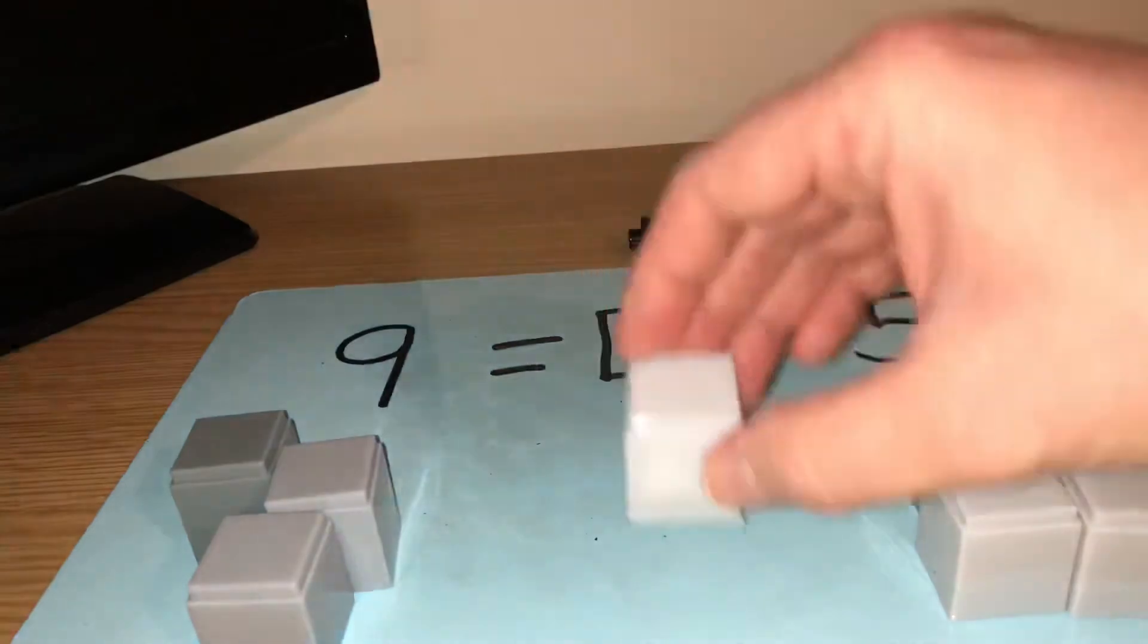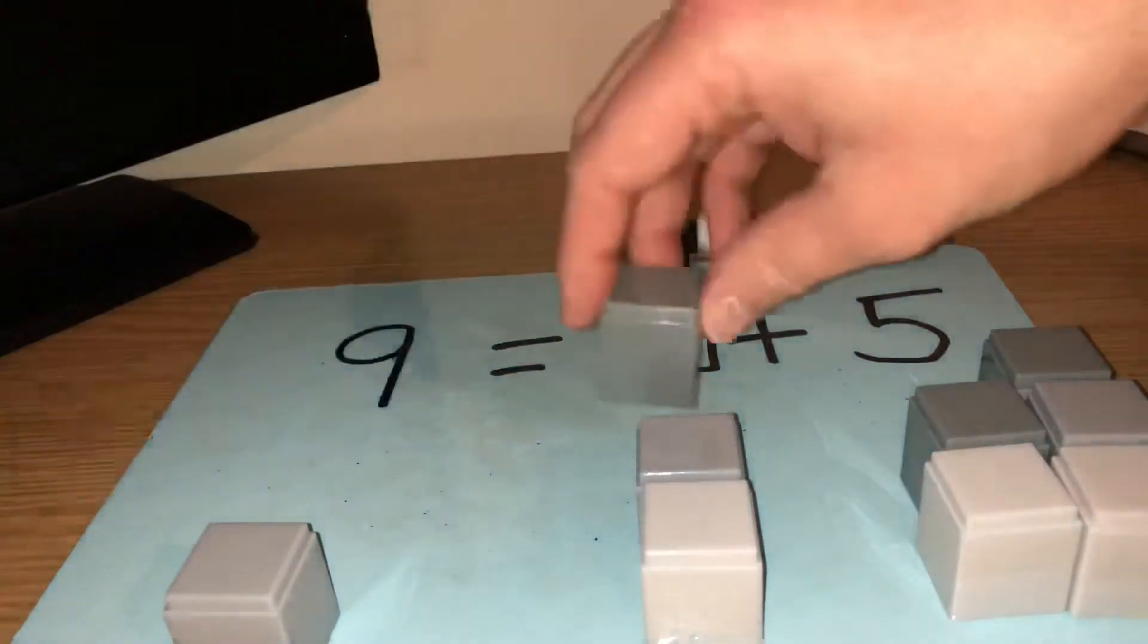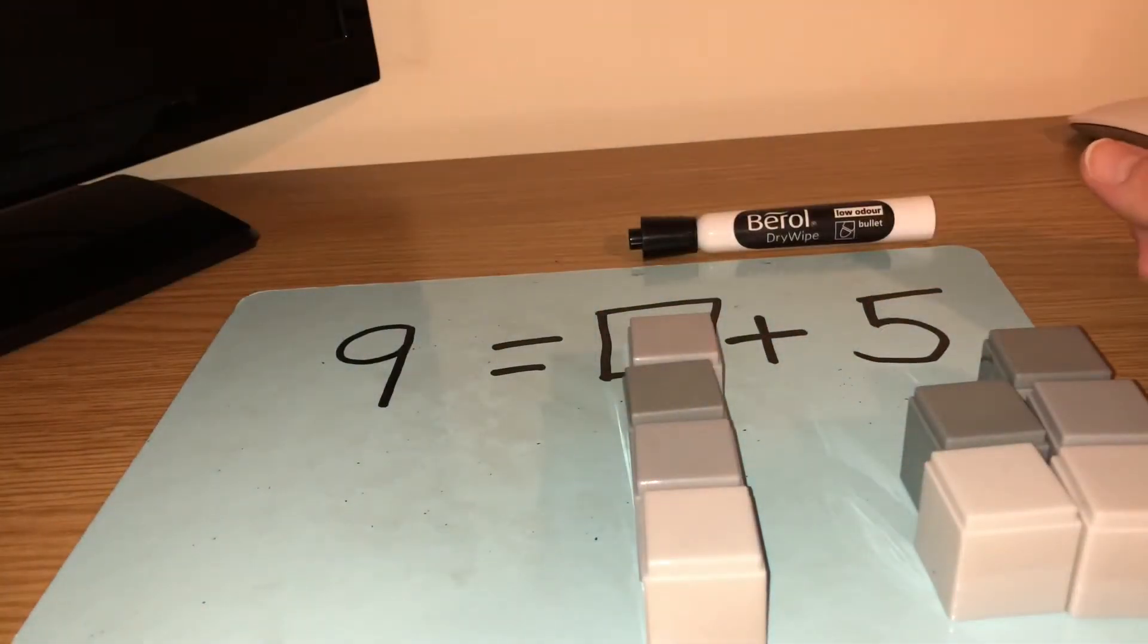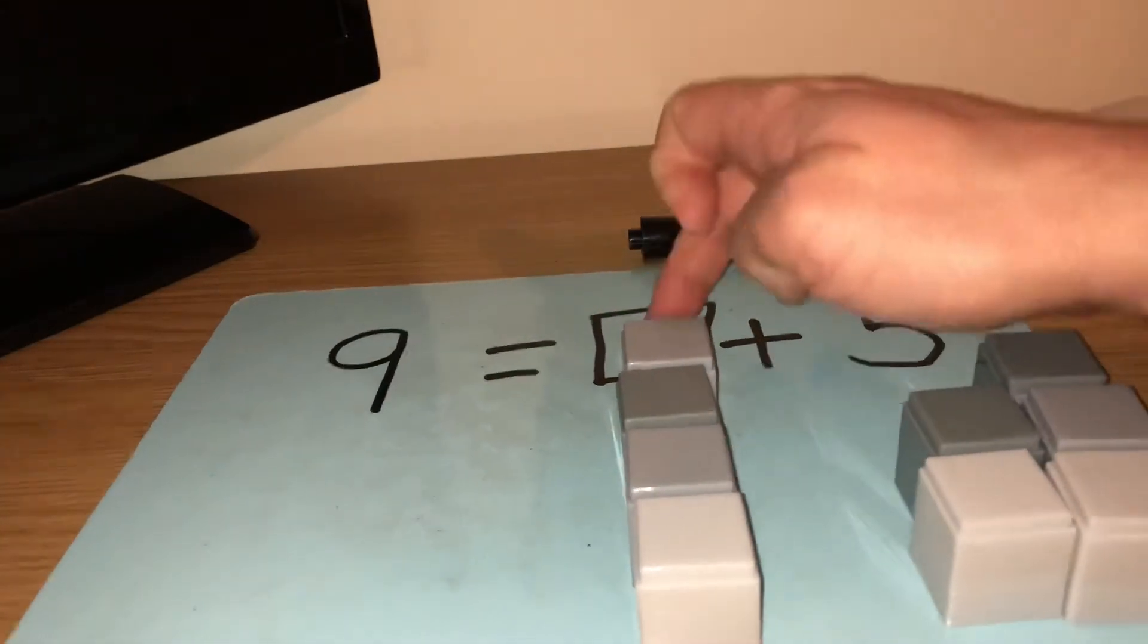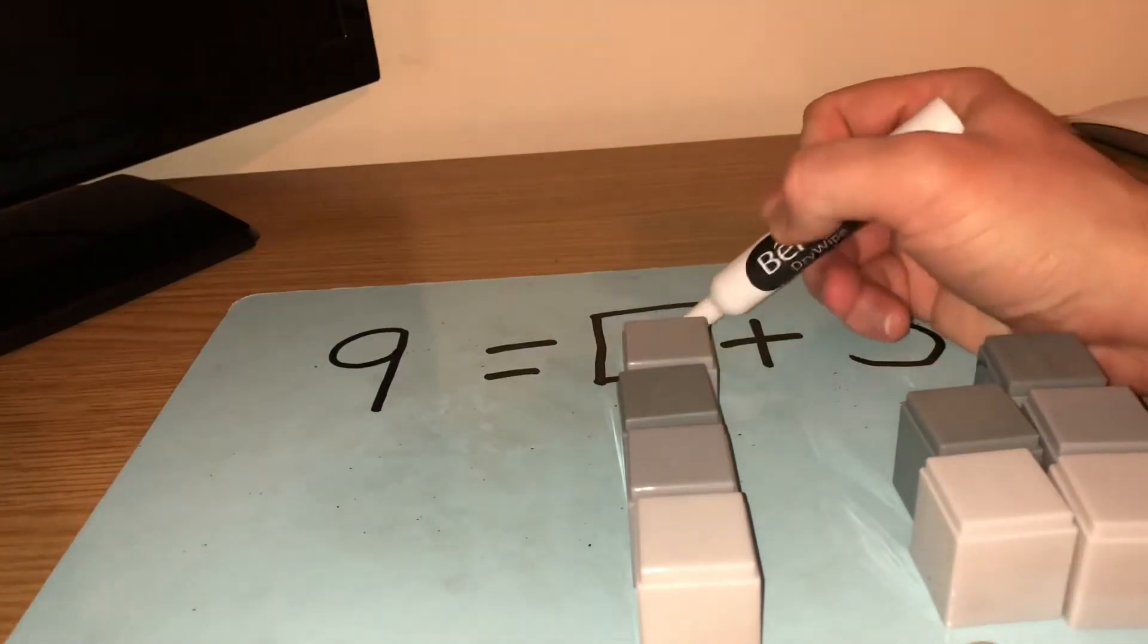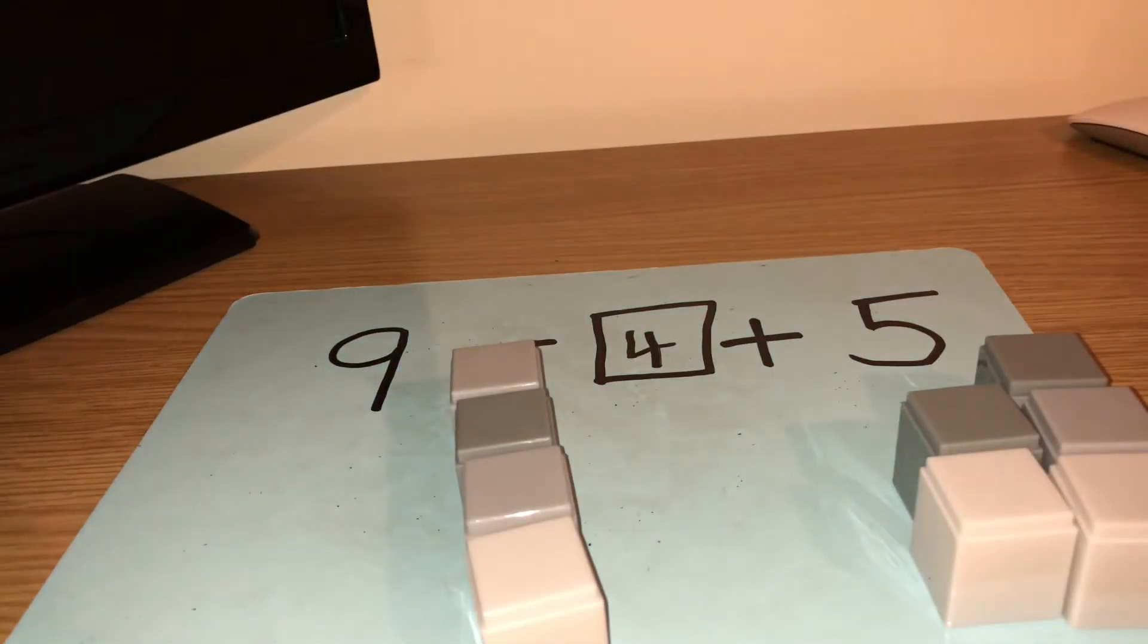So how many blocks have we got left? Let's see. 1, 2, 3, 4. So I found out that the missing number here has to be 4 because with the number 5 you need 4 to make 9.